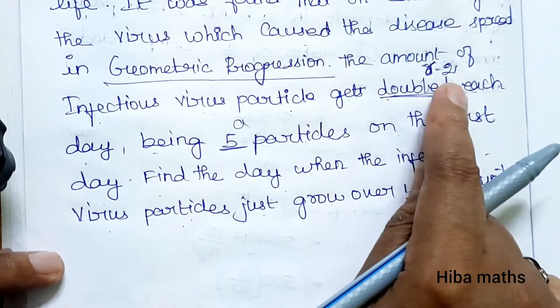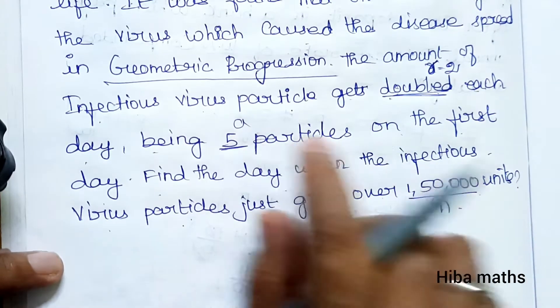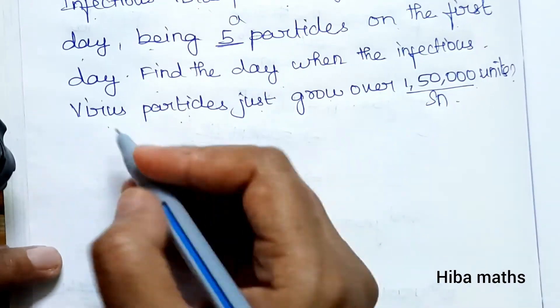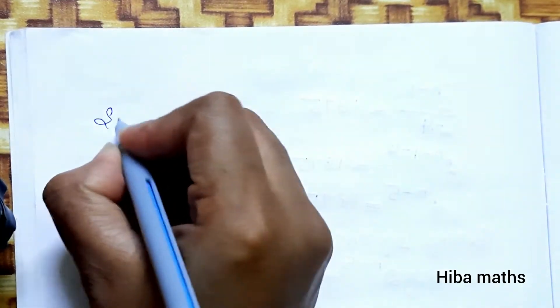We need to find n. The first term a is 5, the ratio r is 2. We'll use the sum formula for geometric progression.